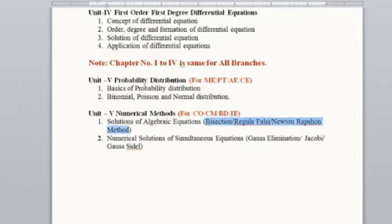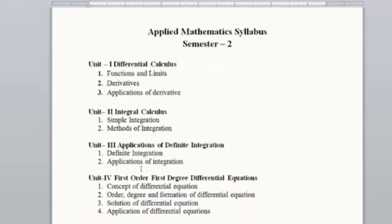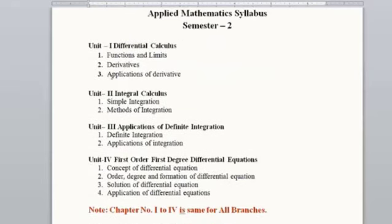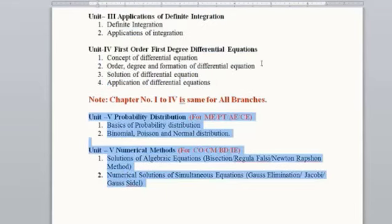For solving algebraic equations in Numerical Methods, students use three methods: Bisection Method, Regula Falsi Method, and Newton-Raphson Method. The second topic is Numerical Solution of Simultaneous Equations, solved using Gauss Elimination Method, Jacobi's Method, and Gauss-Seidel Method. Chapters One to Four have the same syllabus for all branches; only Chapter Five differs.